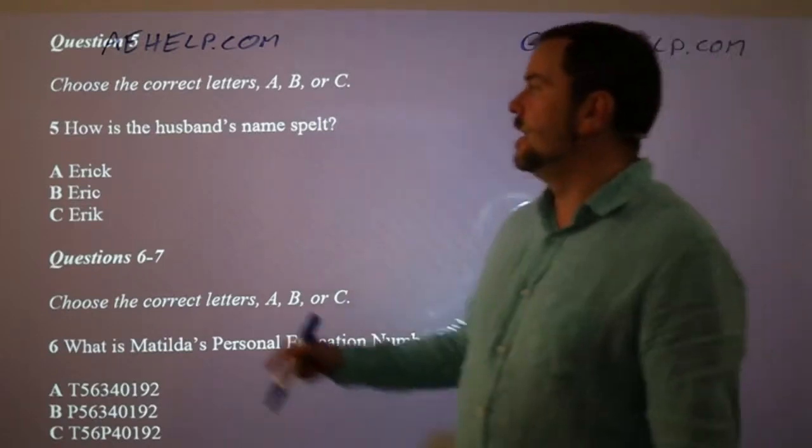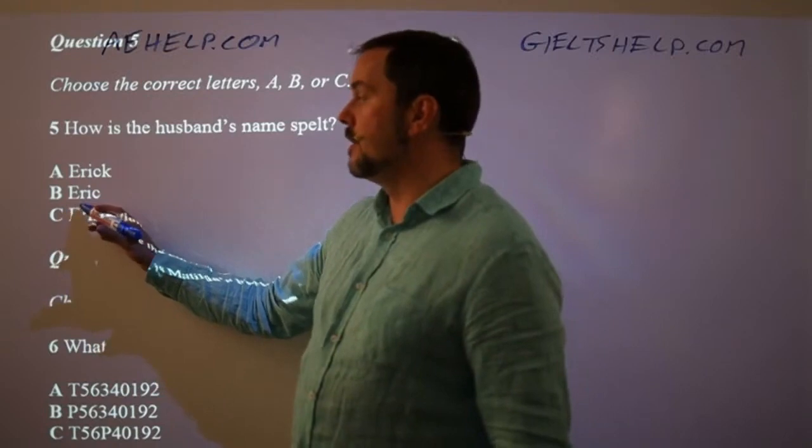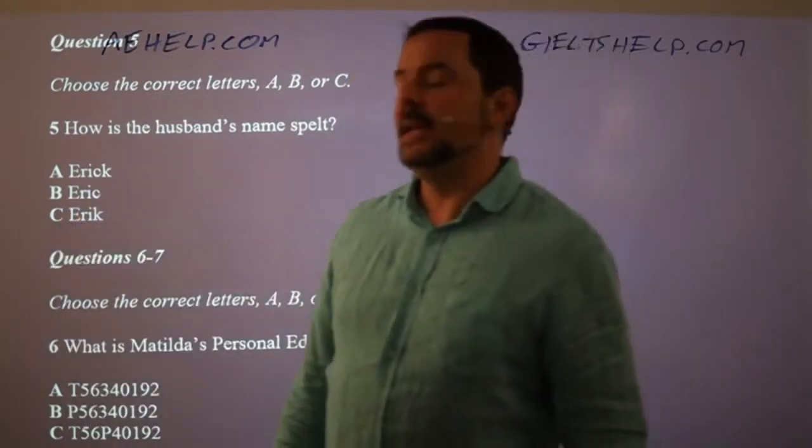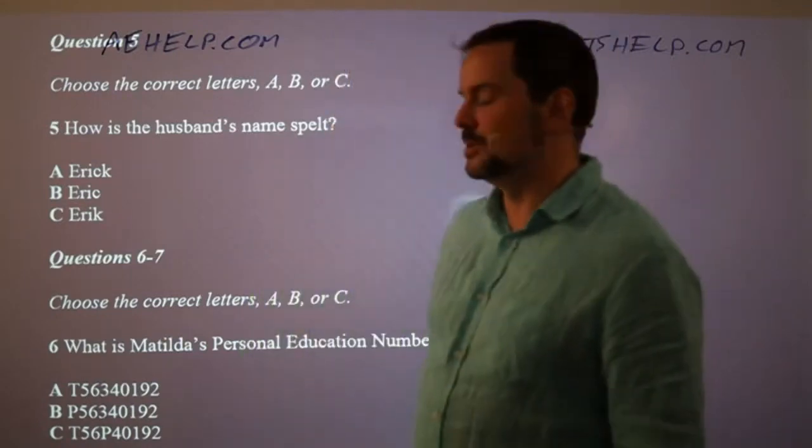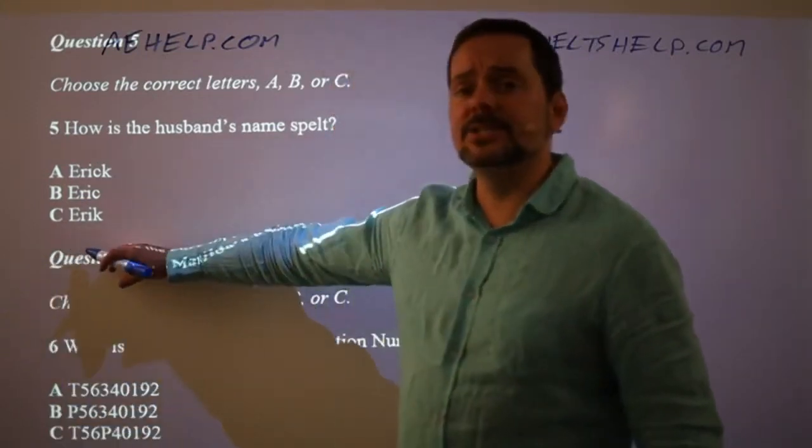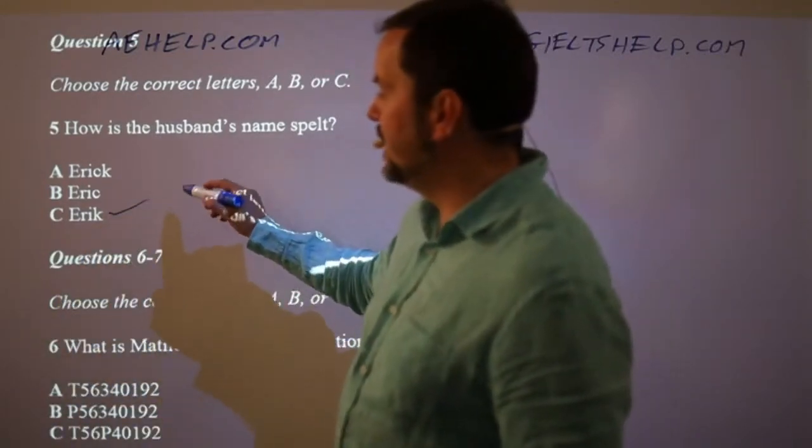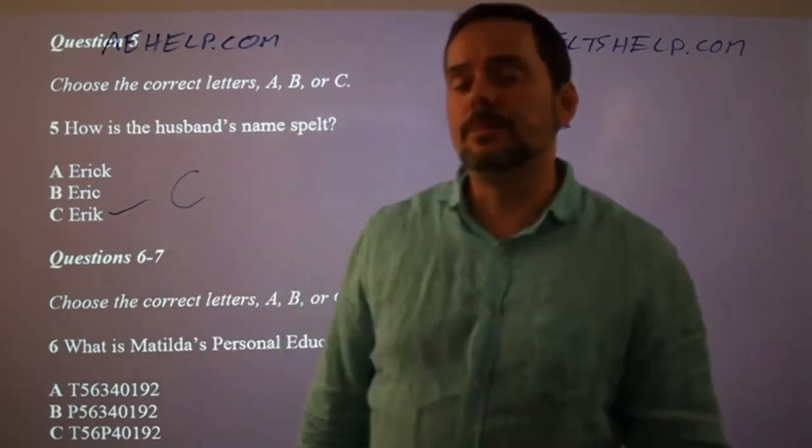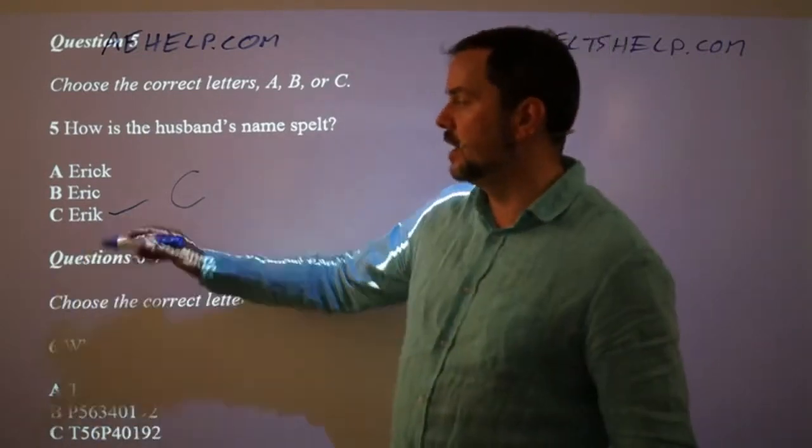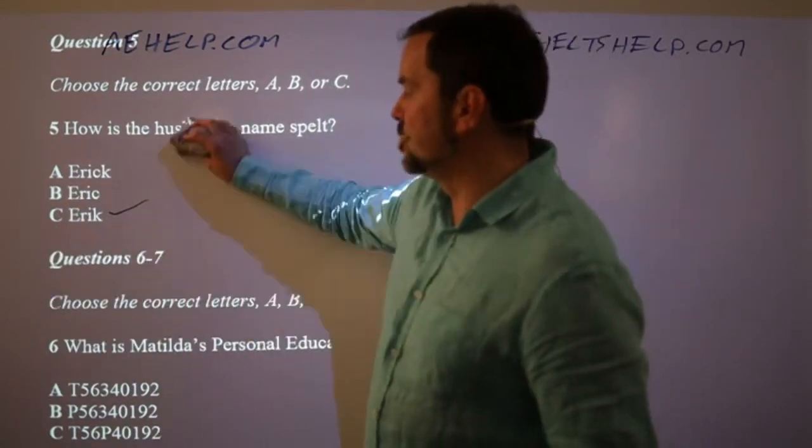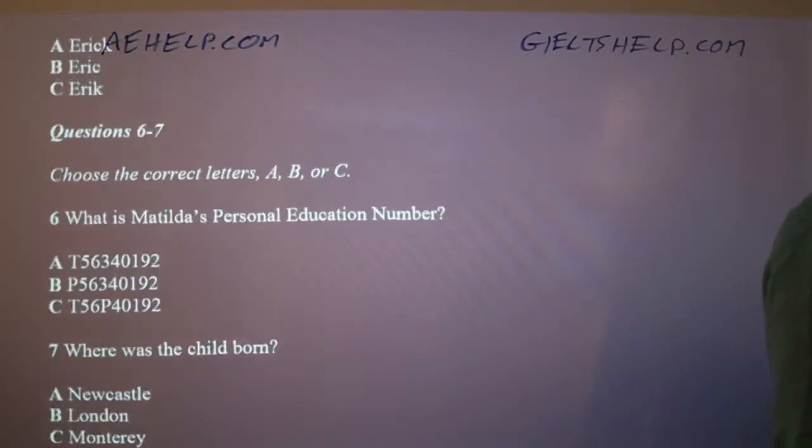How is the husband's name spelt? A, B, or C. The correct answer here is C. The speaker says, My husband is Swedish, so his name is with a K instead of a C. So, it's E-R-I-K. These are all three spellings of Eric, but the Swedish version is with a K.